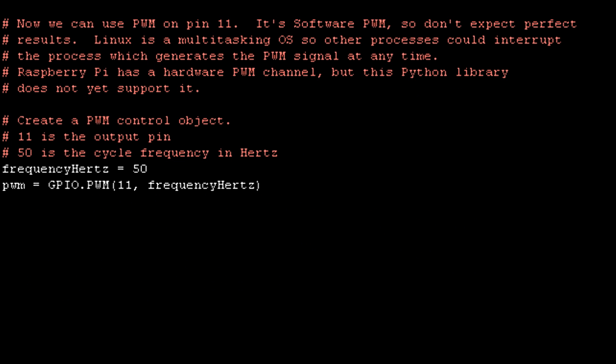To send a PWM signal on one of the GPIO pins, this particular Python library allows us to create a PWM object, and its constructor takes a pin number and a frequency. I'm going to specify pin 11 at a frequency of 50 Hz.